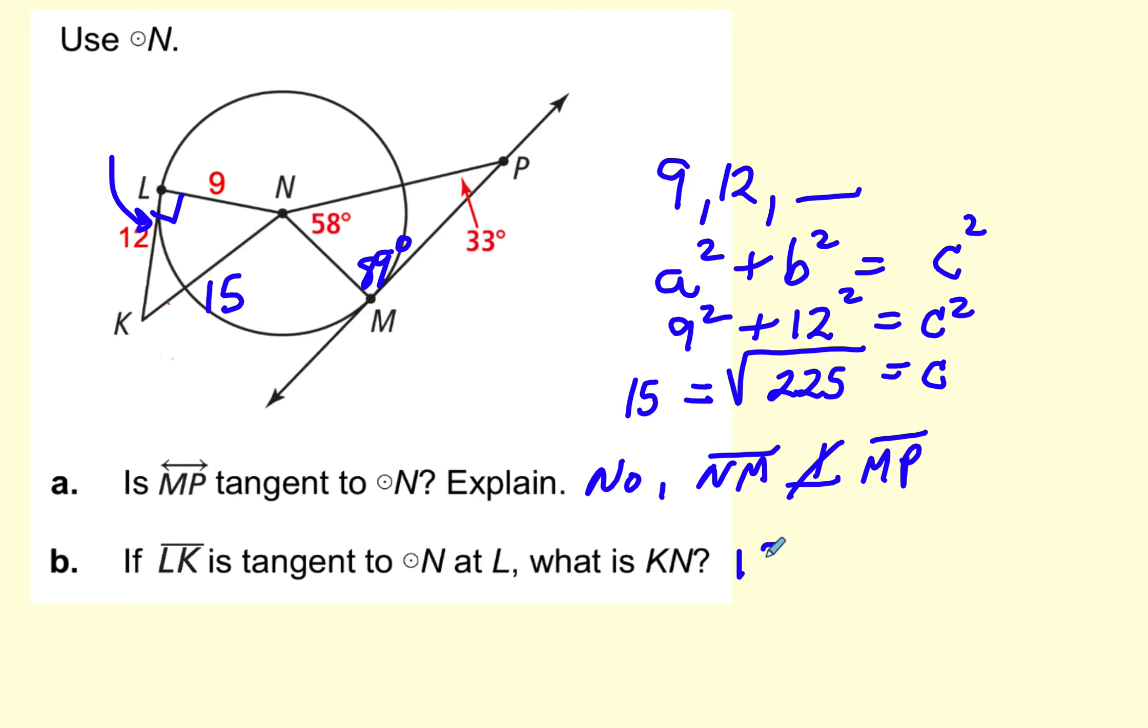Another way to have done this is to recognize this is a 3, 4, 5 triangle. So you could have just multiplied this by 3 to get the 9, this by 3 to get the 12, and then you didn't have to go through all that work. We could have just said 15 by using the 3, 4, 5 triangle.